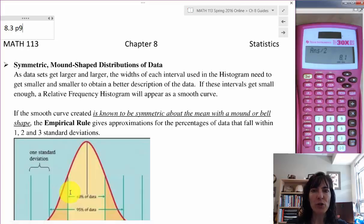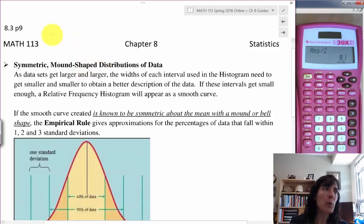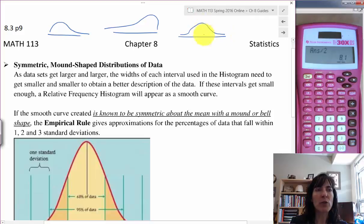When we look at our data distributions, if we do a histogram and we look at the shape of the distribution, remember we can have a skewed right, we can have a skewed left, and we can have this thing that we're calling normal or mound shaped.